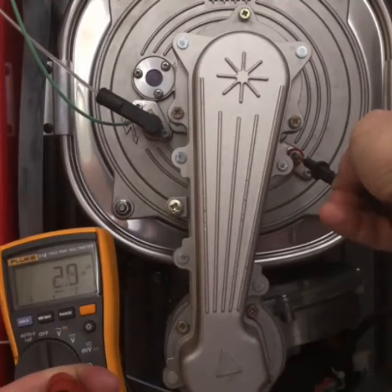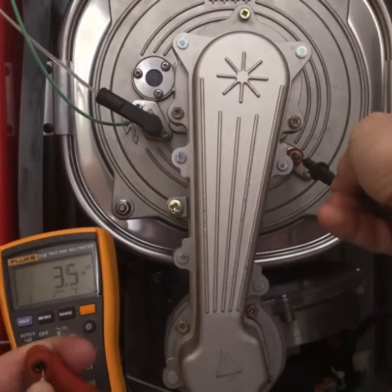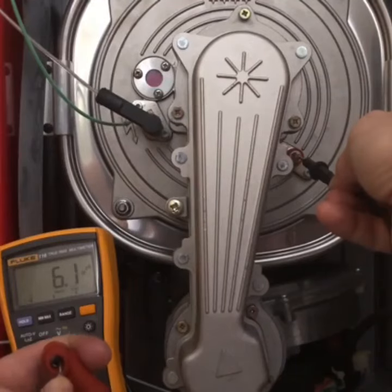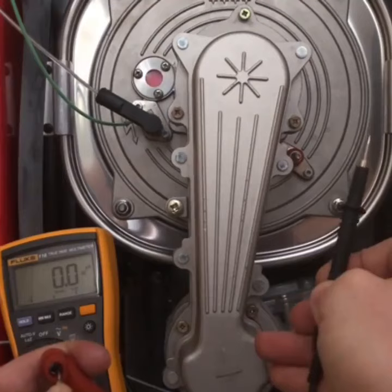When the boiler fires, the flame has an AC voltage. The flame sensor rectifies that to DC, and that's what the PCB is looking for. On this boiler, it's between five and eight microamps, and you can get that information from the manufacturer.